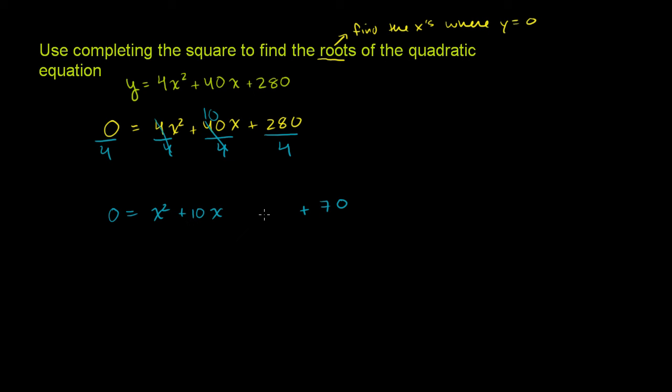And then we can use that to actually solve for x. So how do we turn this into a perfect square? Well, we have a 10x here. And we know that we can turn this into a perfect square trinomial if we take half of the 10, which is 5, and then we square that. So half of 10 is 5. You square it. You add a 25.